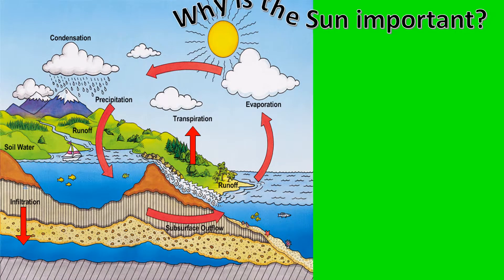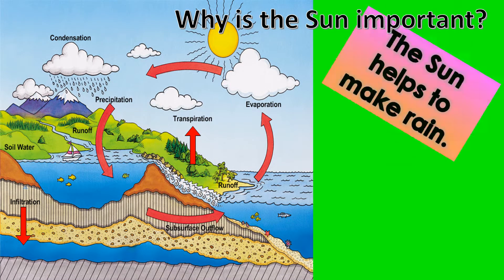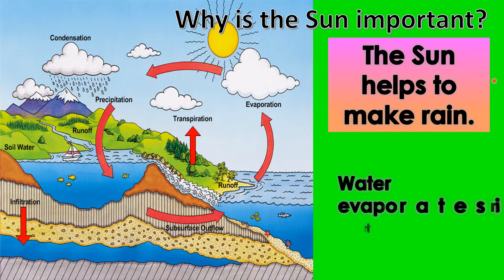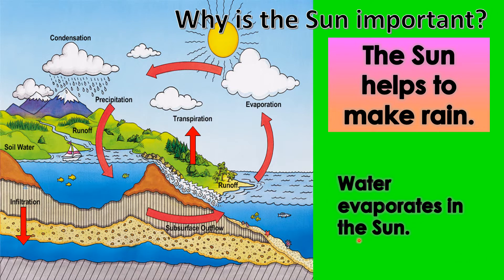Why is the sun important? The sun helps to make rain. Water evaporates in the sun. Because of the heat of the sun, the water from the rivers, the lakes, and the seas will go up or evaporate. And later on, through the process called the water cycle, it will become rain — the water goes down.